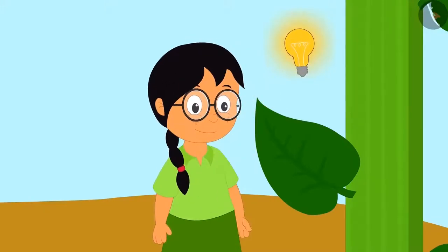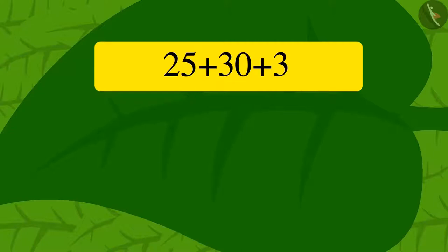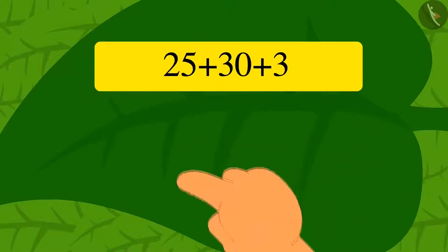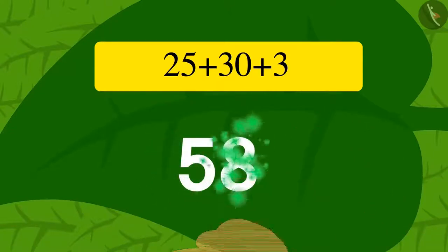Like what we did, Meenu solved this riddle in her mind and wrote the answer, 58, with her finger on the vine leaf. As soon as she wrote the answer to the puzzle, the vine became shorter as it sunk into the ground.